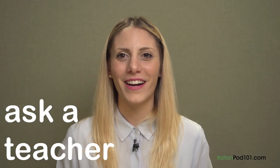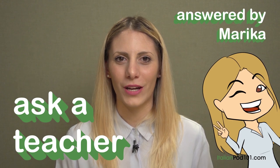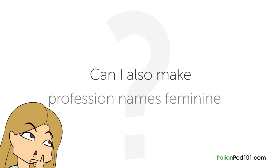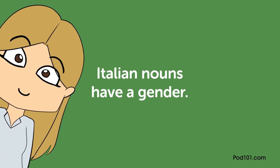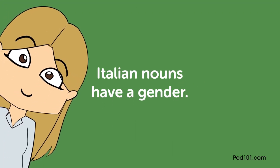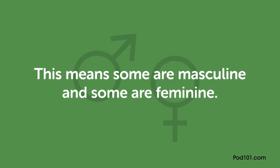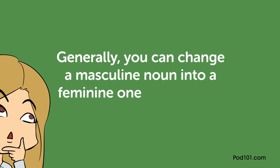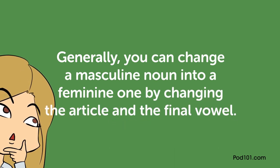Hi everybody, Marika here. Welcome to Ask a Teacher. The question for this lesson is: can I also make profession names feminine? Italian nouns have a gender — some are masculine and some are feminine. Generally, you can change a masculine noun into a feminine one by changing the article and the final vowel. For example, 'il bambino' — the child, masculine — becomes 'la bambina,' feminine.